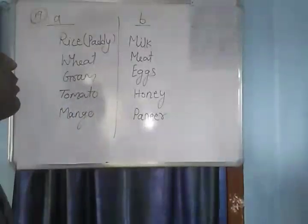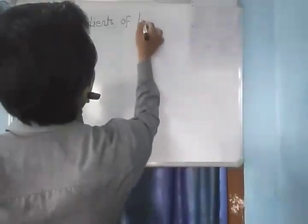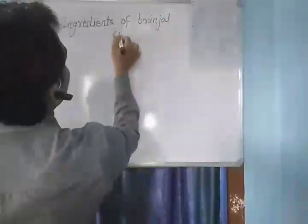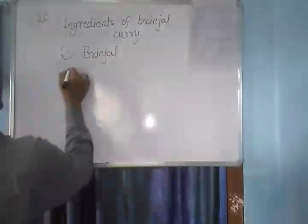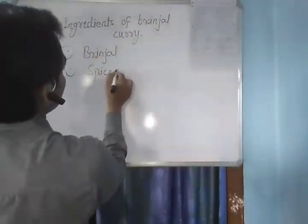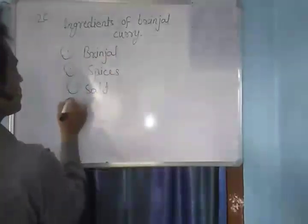Moving to question number 20. The question is: write the names of the major ingredients of brinjal curry. The major ingredients of brinjal curry are: first, brinjal; second, spices; third, salt; and fourth, water.